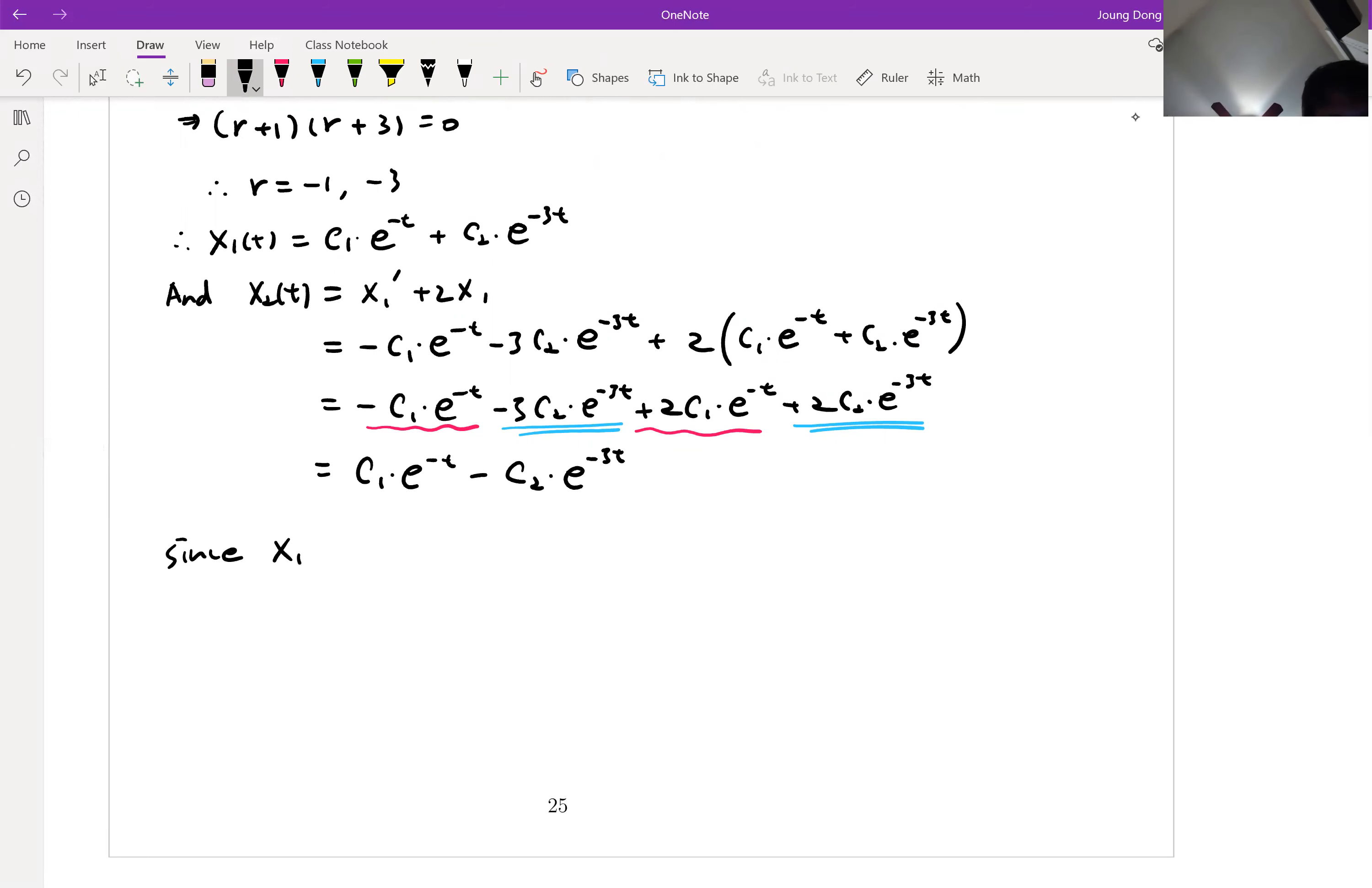So, since x1(0) is given by 2, then plug in 0 in there. x1(0) is c1 plus c2, that's it. And since x2(0) equal to 3, let me put the 0 into my x2. Then what happened? e to the 0 equal to 1 and e to the 0 equal to 1 as well. And c1 minus c2 equal to 3. So from this two, we can set the system.